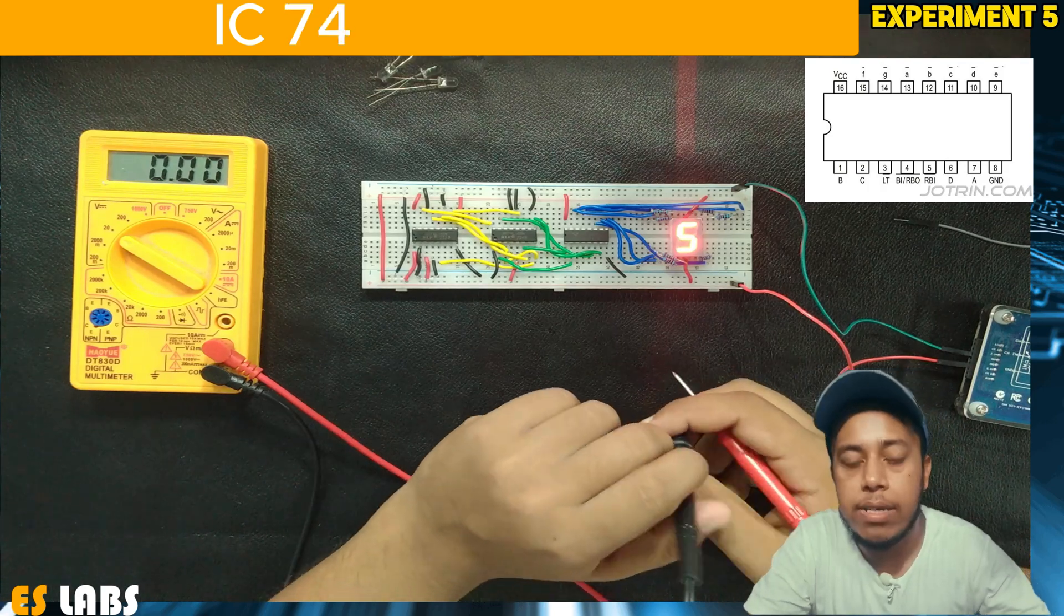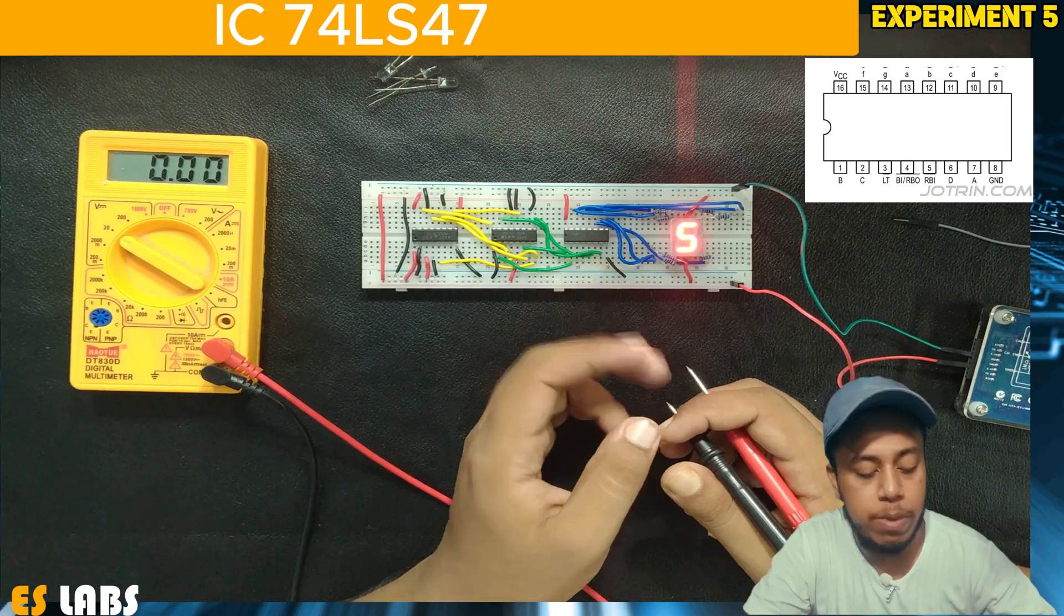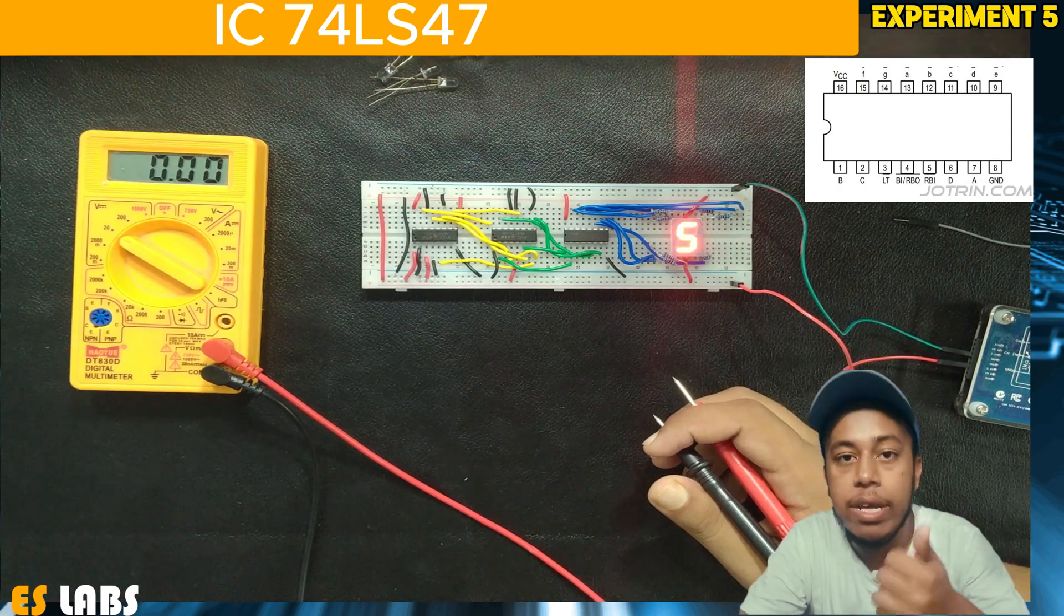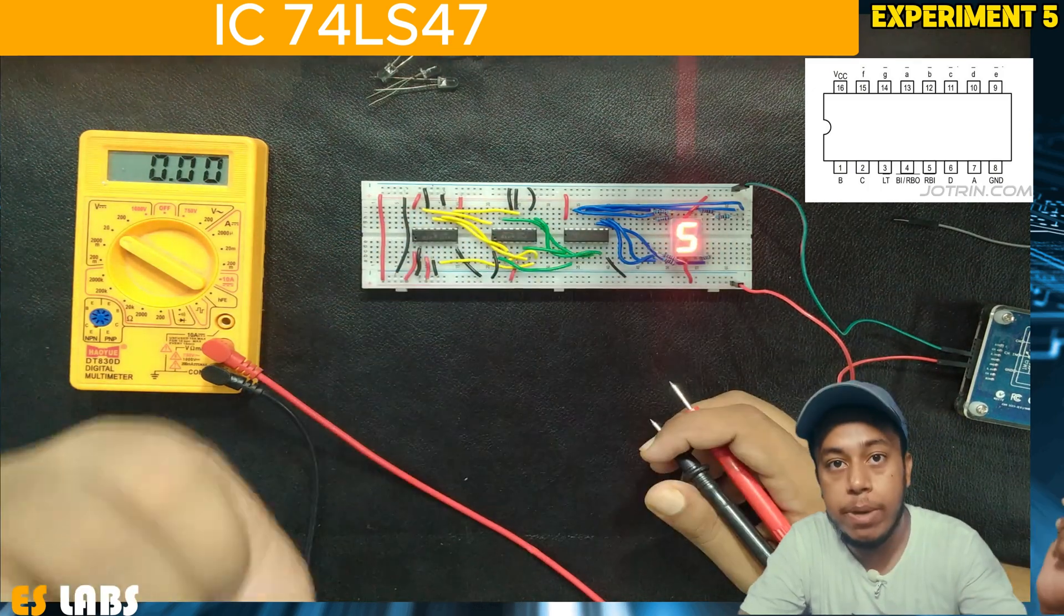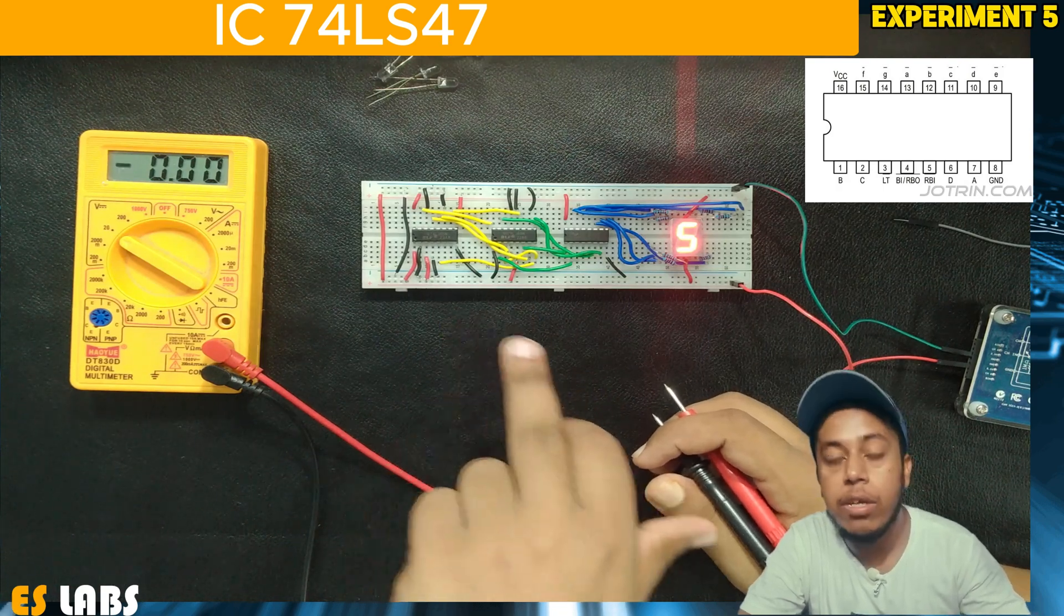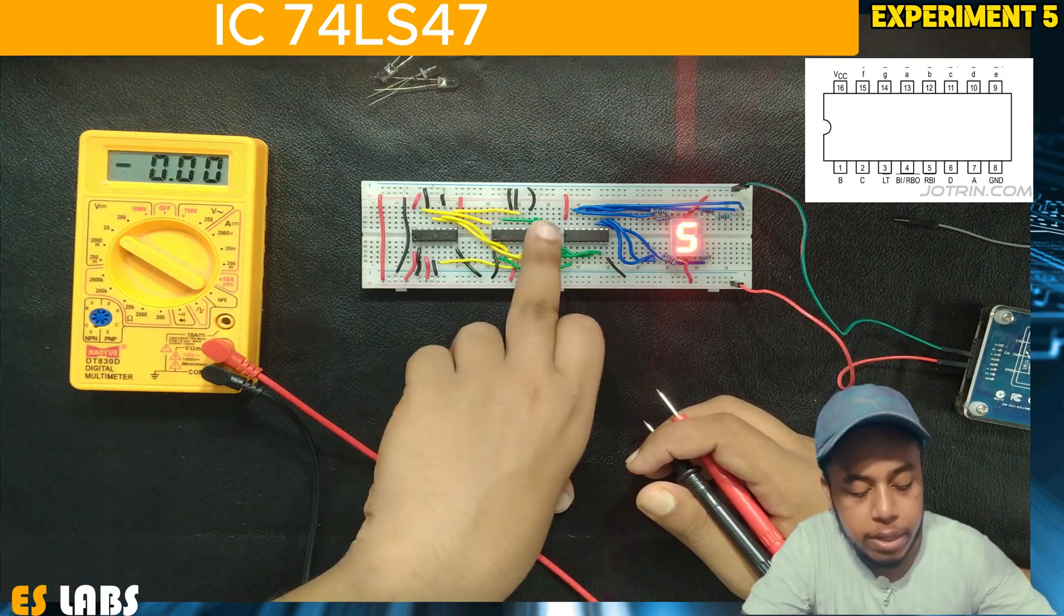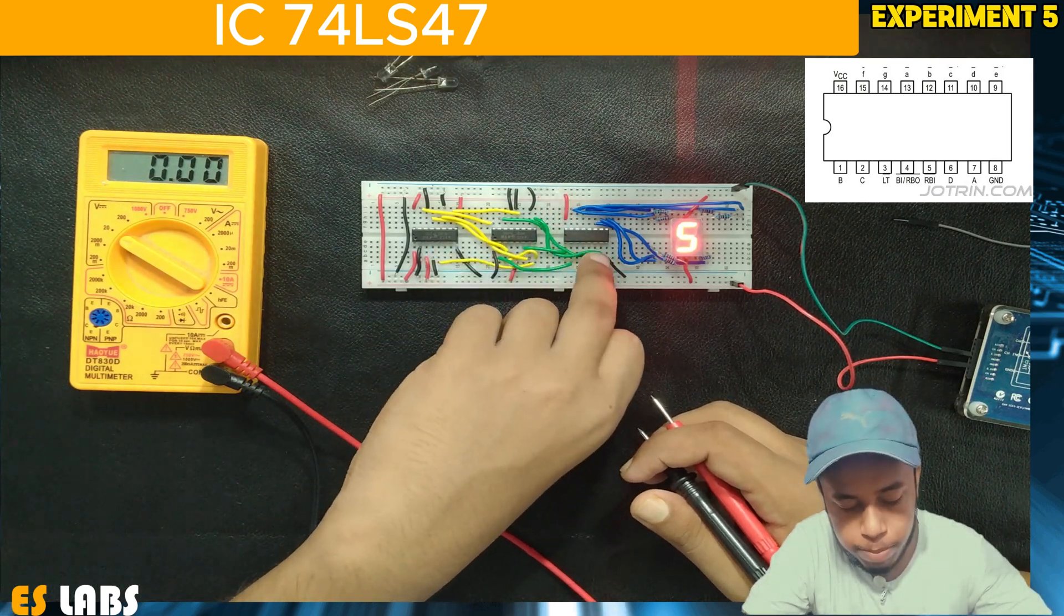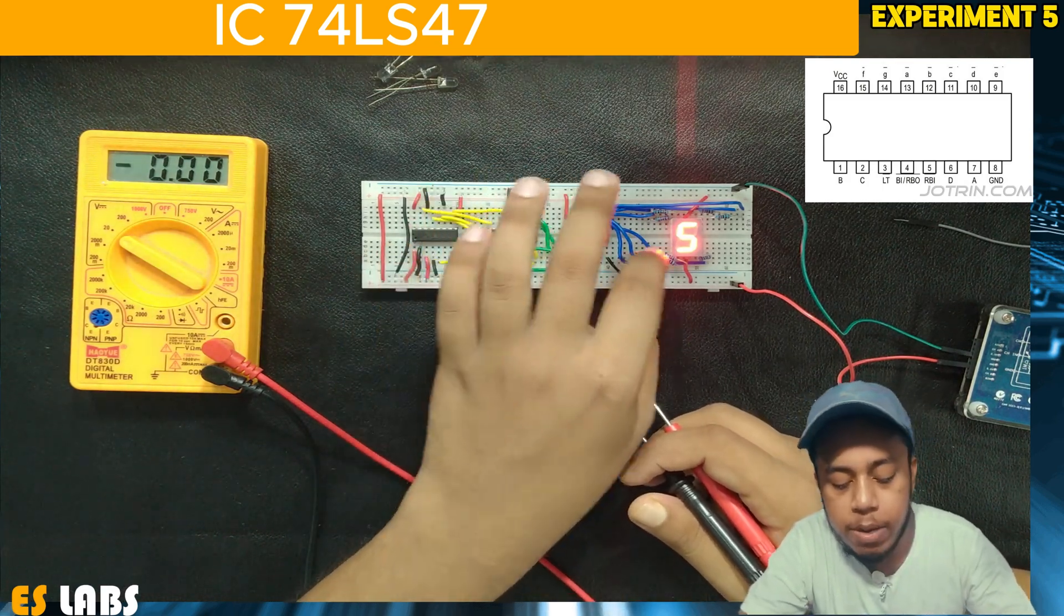Now we move to the next IC which is 74LS47, the driver IC for 7 segment display. It takes input from D, C, B, A where D is MSB. Summation 4 from 74LS83 goes to D, summation 3 goes to C, summation 2 goes to B, and summation 1 goes to A. Pin 16 is VCC and pin 8 is ground. This drives the 7 segment display.